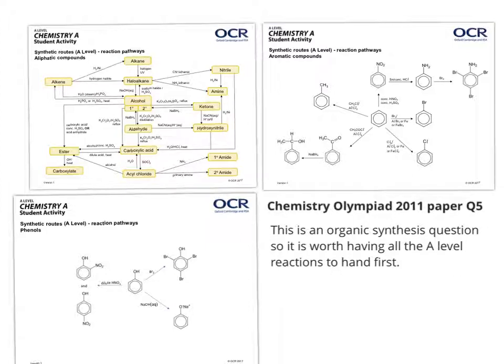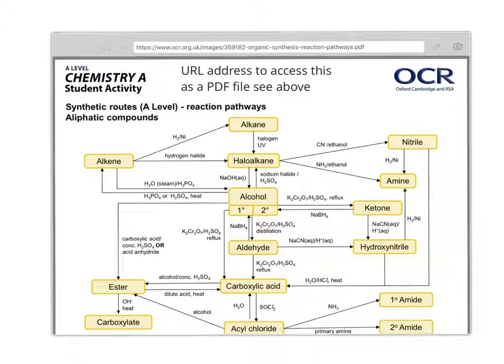This document that I've got a few pages from on the screen is an excellent resource from the OCR Exam Board's website. Before going any further, it might be worth taking a snap or typing in the URL address on the screen so you can access a PDF of that map of reagents and conditions to go between various functional groups that you'll learn about.